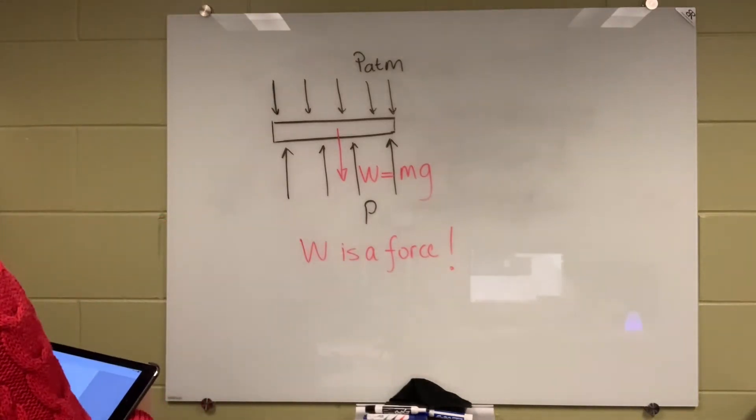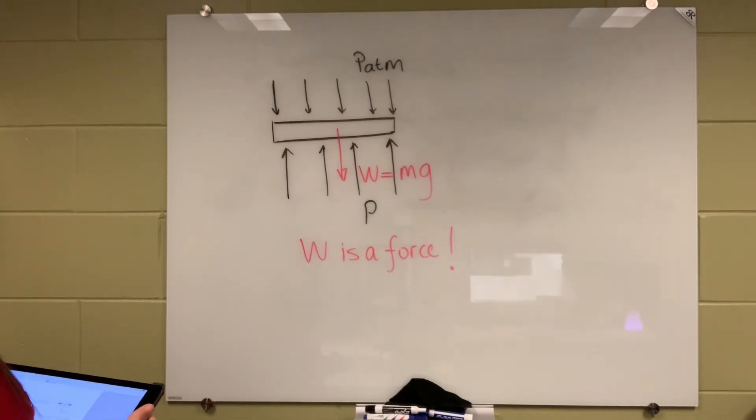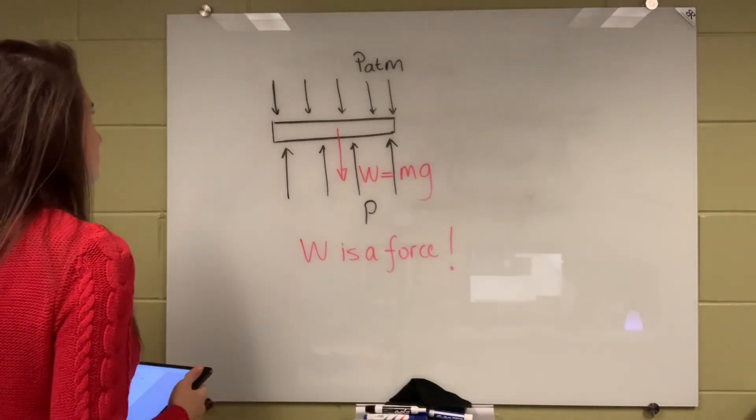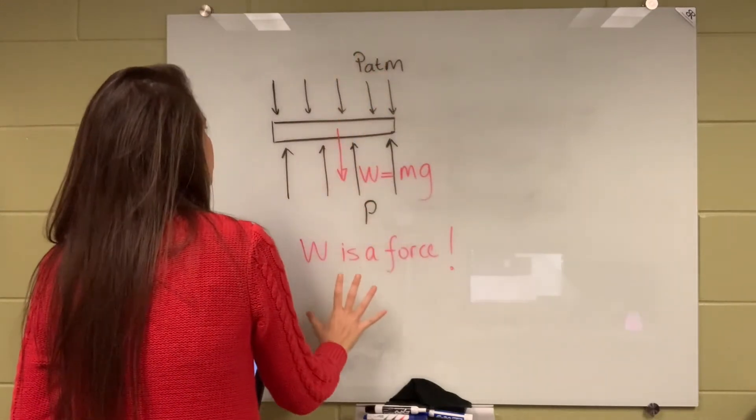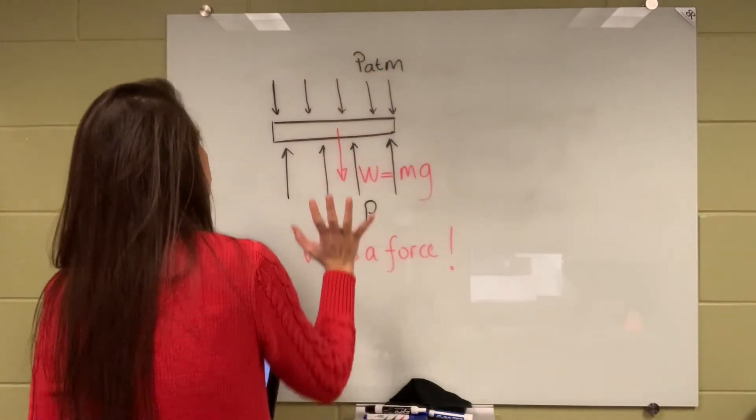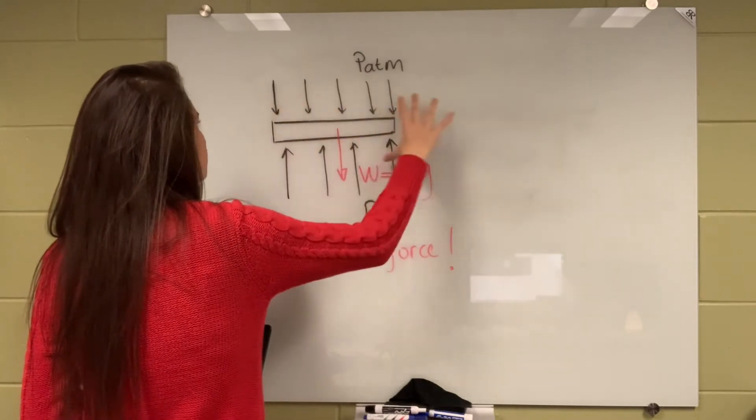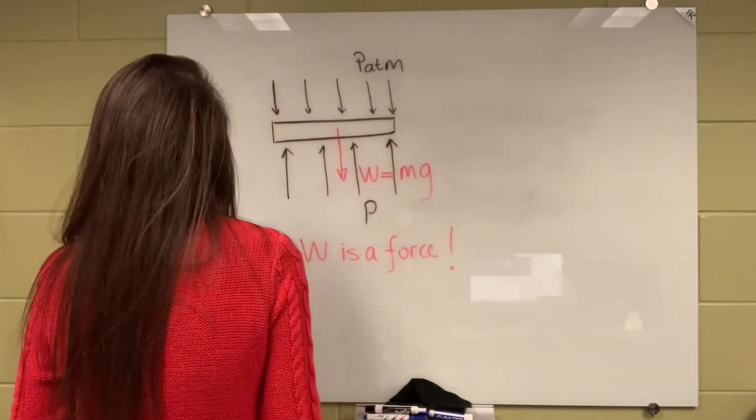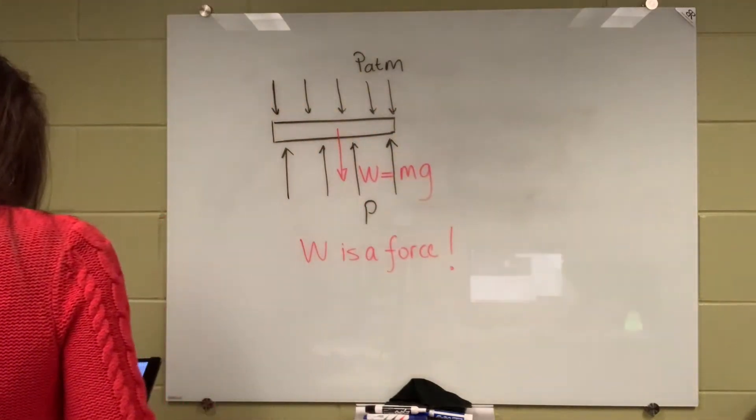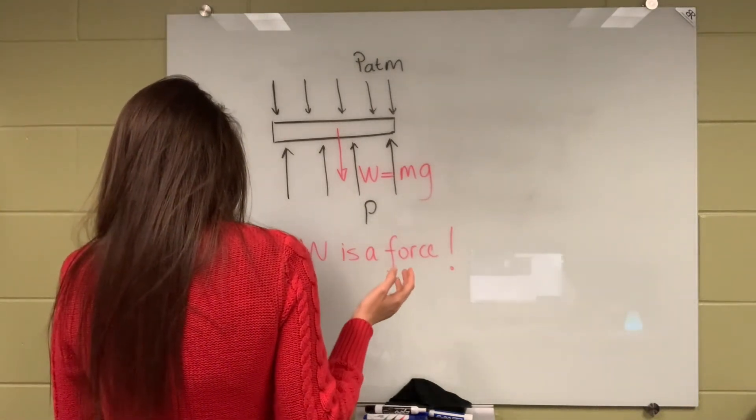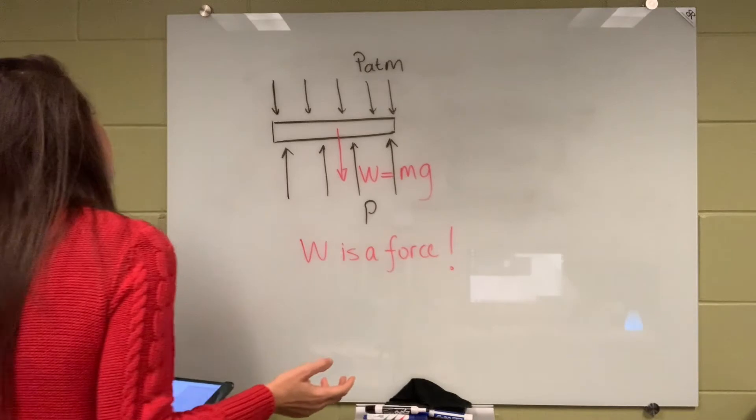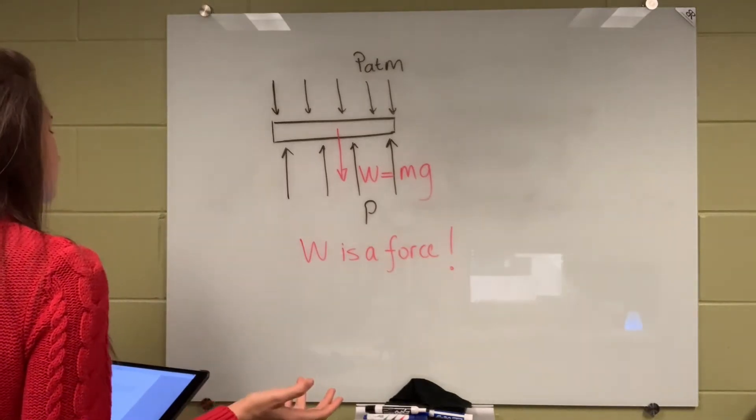Okay, based on that, now let's write down force balance. Whatever is pushing down has to be equal to whatever is pushing up so that this piston is in equilibrium. We know that force over area is the pressure, right?